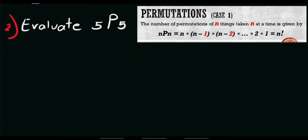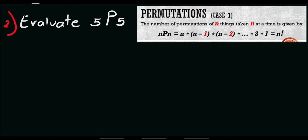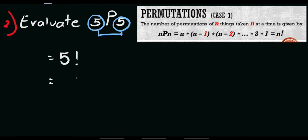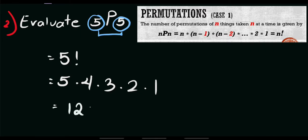Next, for item number 2, evaluate the permutation of 5 taken 5 at a time. Again, this set of values are equal, so automatically we will use the concept of factorials. Using the given formula, we have 5P5, which simply equals 5 factorial. That is 5 times 4 times 3 times 2 times 1. Let's simplify this: that equals 120. So, that is our final answer for this given problem.